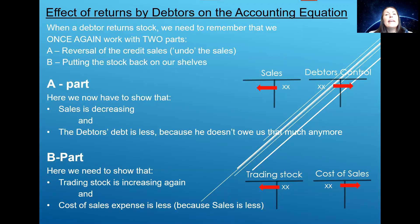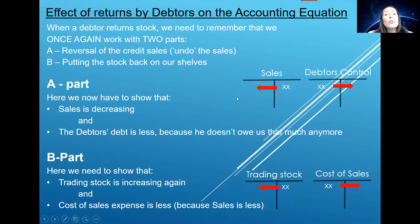We have to indicate that in the B part as well. In the sales account, we credited sales because sales is an income. When we need to show that the debtor has brought stock back and that our sales has decreased, we will obviously have to write on the debit side. Please be aware that we are not allowed to write on the debit side of sales, so when we do the reversal, we're going to create a new account called debtors allowances. Originally, when we sold to the debtor, debtors control is an asset, so when the debtor's debt increased, we wrote on the debit side. Now the debtor owes us less, so we will make an entry on the credit side of debtors control.